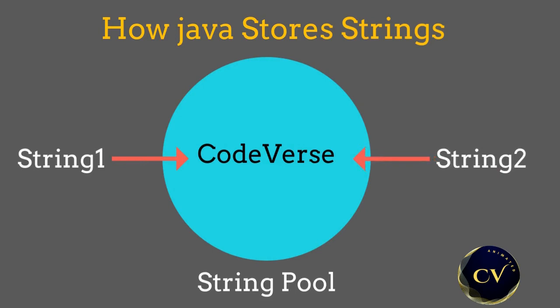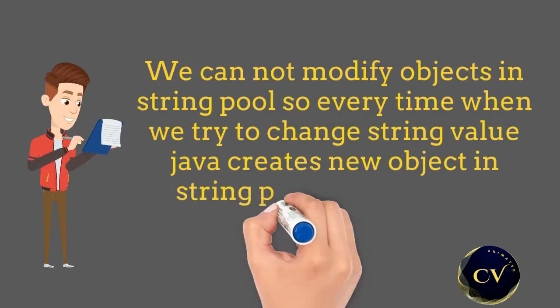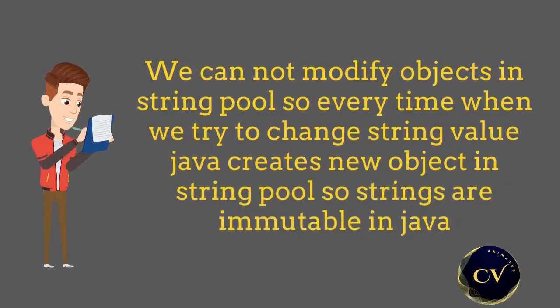Now if I want to modify the value of string1 to something else, then Java will create another object in the string pool with the value something else. In other programming languages, if we try to use the equal-to operator, it will modify the existing value of a string. But in Java, instead of modifying the object value in the string pool, Java creates a new object for that string. So we cannot modify the objects in a string pool once created. That's why strings are immutable in Java.